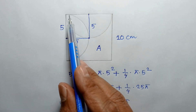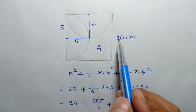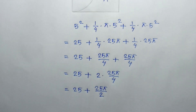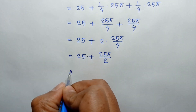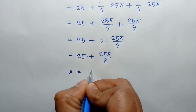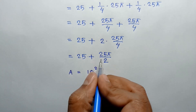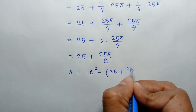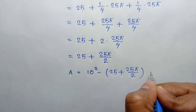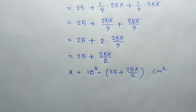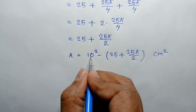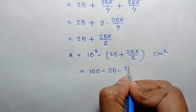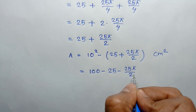Now the area of this region A will be the area of the whole square with side 10 centimeters minus this inner region. So area of region A equals the area of the big square, 10 squared, minus this portion: 25 plus 25π over 2 square centimeters. That gives 100 minus 25 minus 25π over 2 square centimeters.